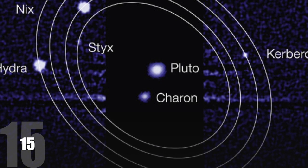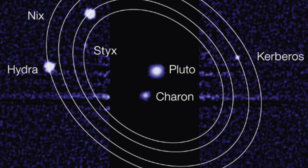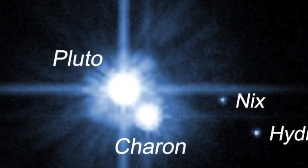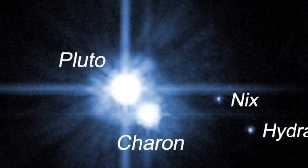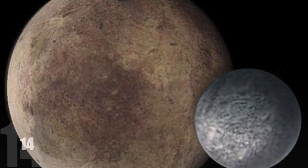Pluto has five known moons: Charon, Nix, Hydra, and two newly discovered tiny satellites. While Nix and Hydra and the two new finds are relatively small, Charon is roughly about half the size of Pluto. 14.